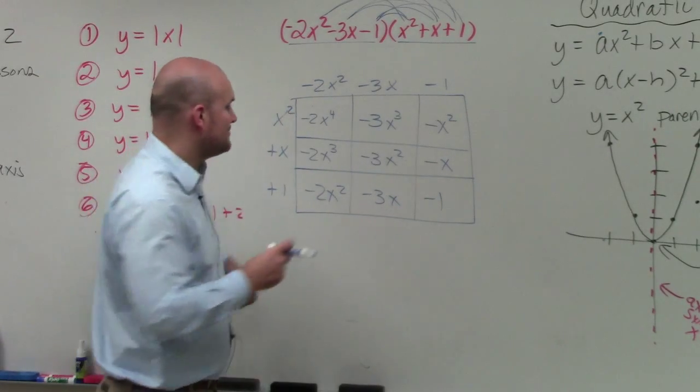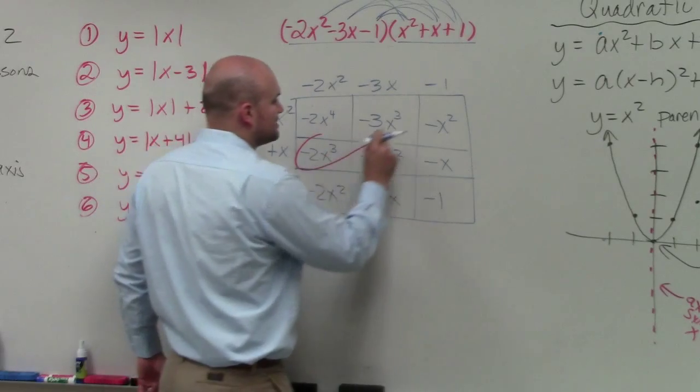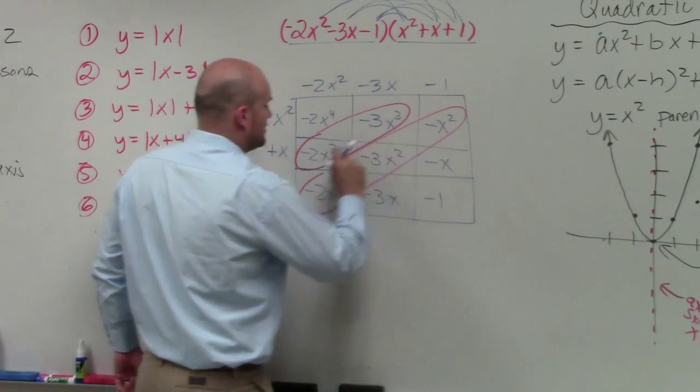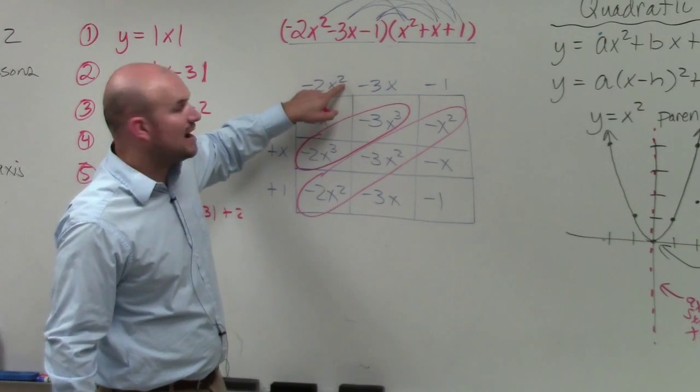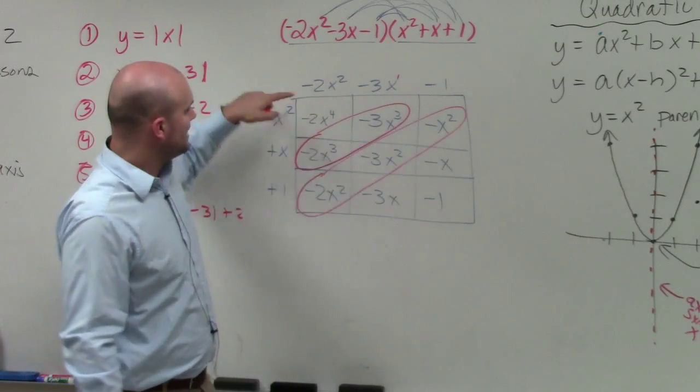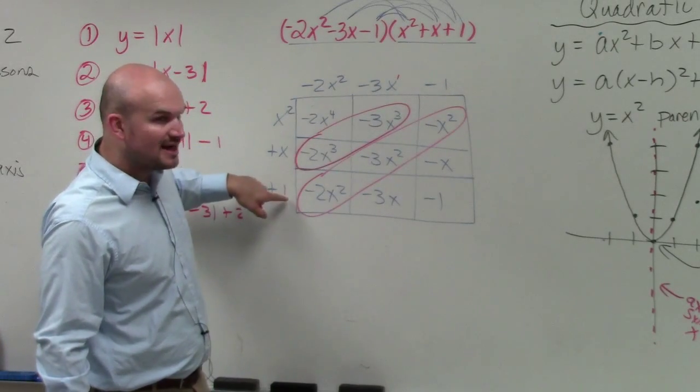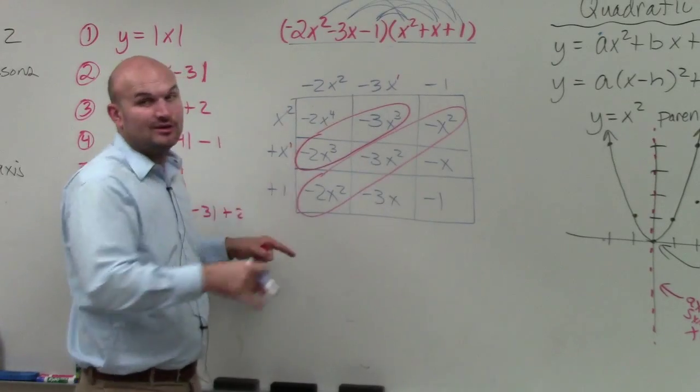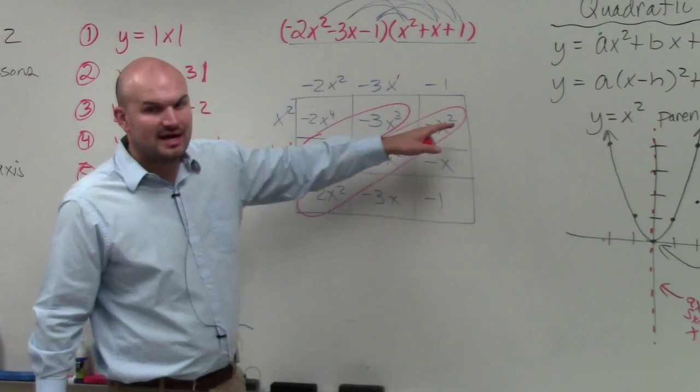And again, as I mentioned, your common terms, as long as you multiply... do you guys see how these are squared is the highest power, and then technically 1, and then the constant? Highest power, 1, and then the constant. As long as you have the powers in descending order, you're always going to have your like terms on a diagonal.